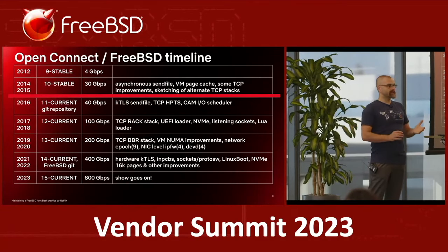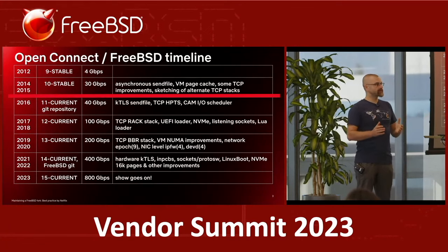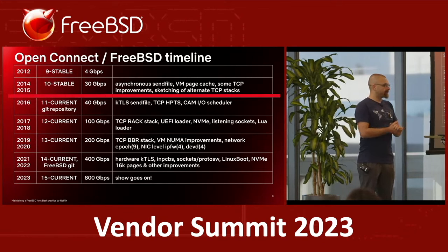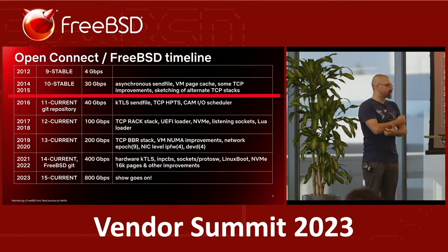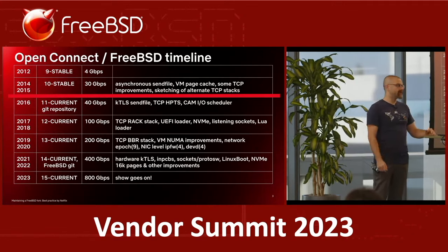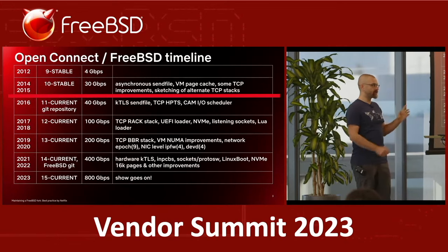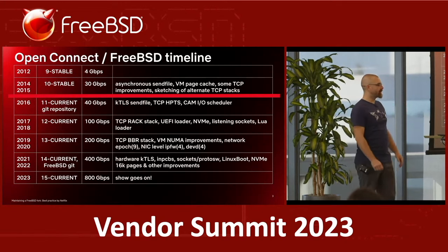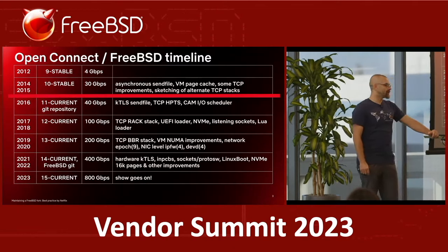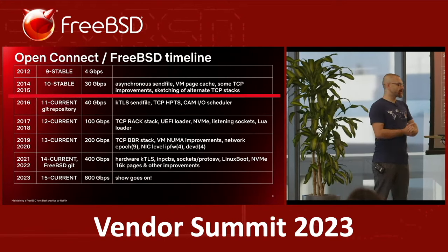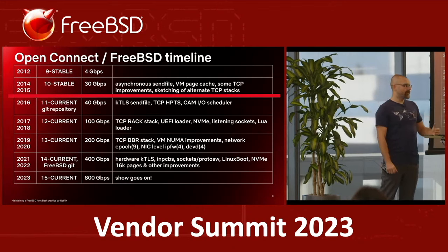Netflix Open Connect together with Nginx started to optimize that, and very quickly we realized that most of the optimization should be done in the kernel. In several years we did jump to FreeBSD 10 — we moved from one stable branch to another stable branch. We had basically two large patches to the kernel that provided increased performance: asynchronous sendfile and VM page cache.